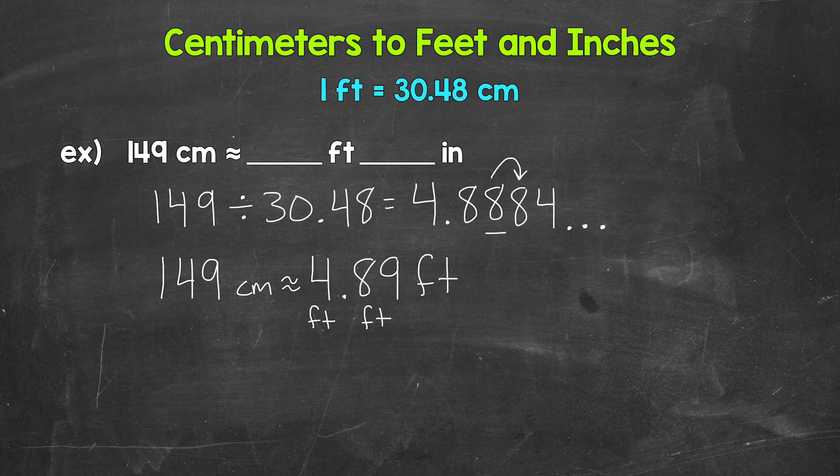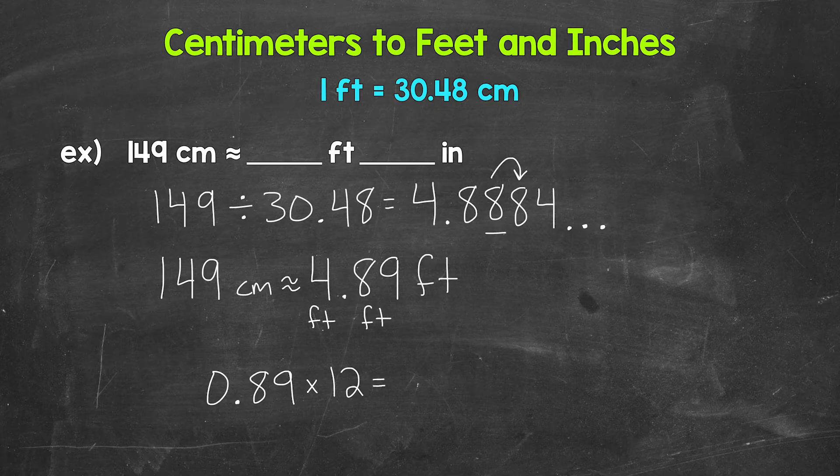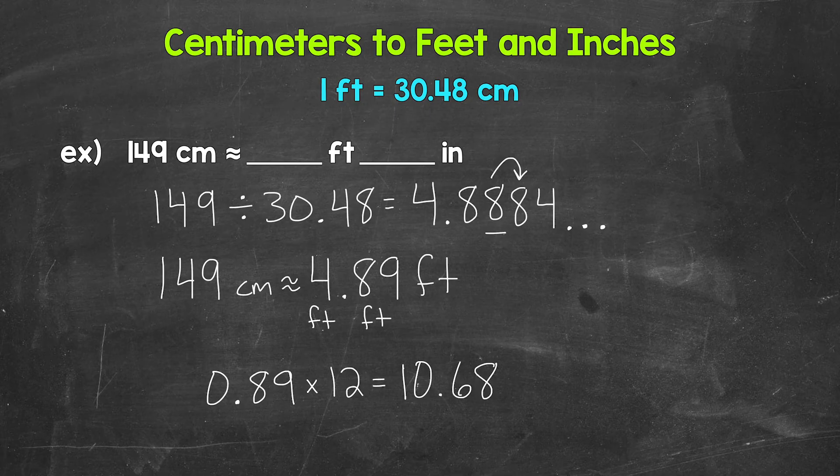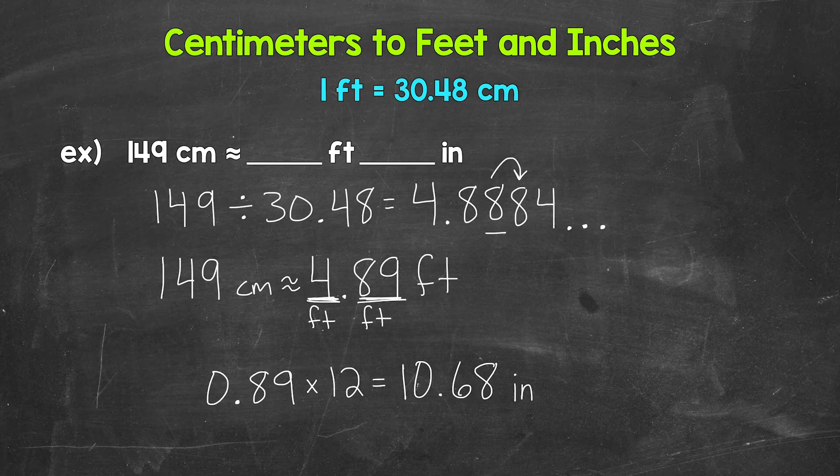Well, how do we convert feet to inches? We multiply by 12. So we take the decimal part 0.89 and we need to convert it to inches. So we have 0.89 and we multiply it by 12 to convert it to inches. 0.89 times 12 gives us 10.68. And this is going to be our inches.